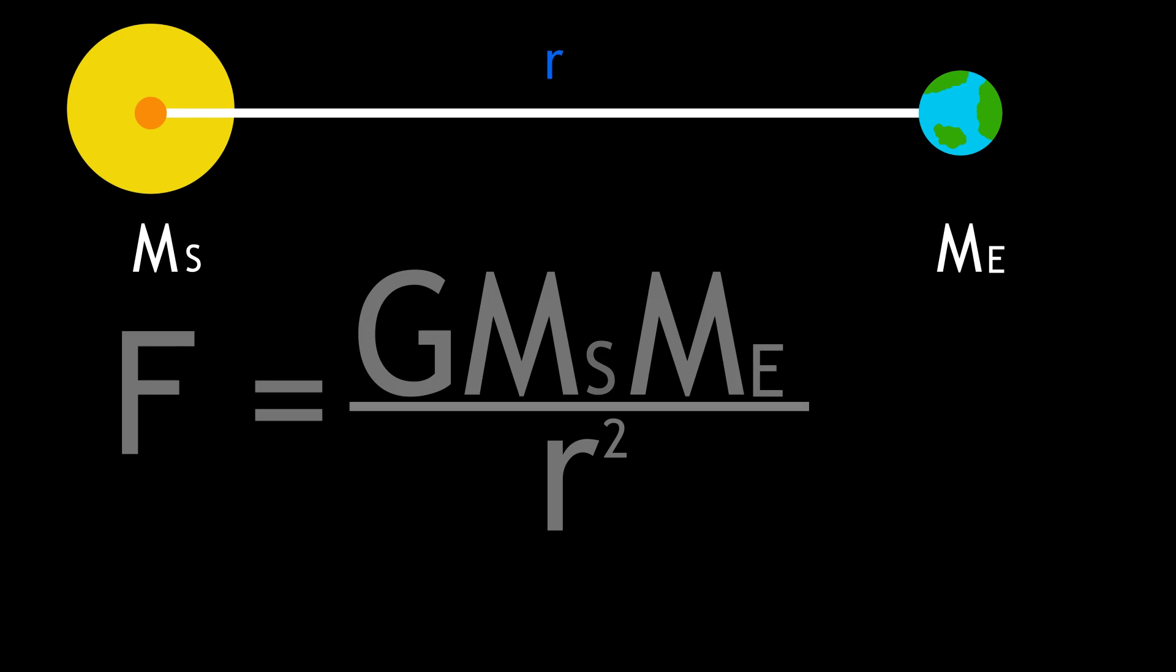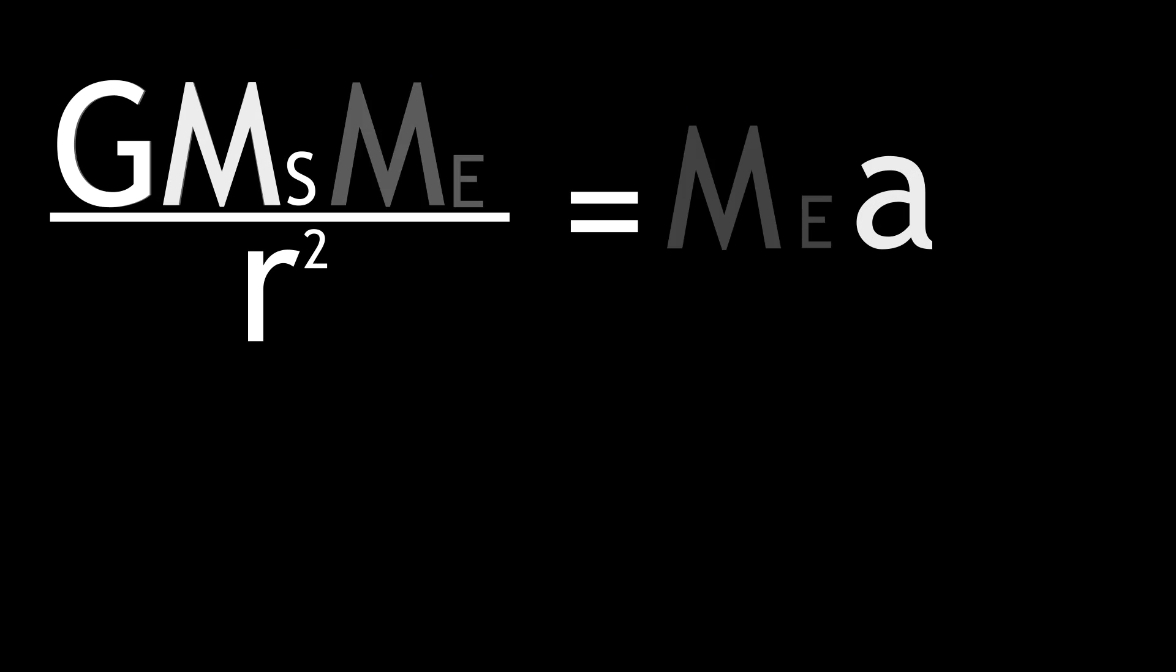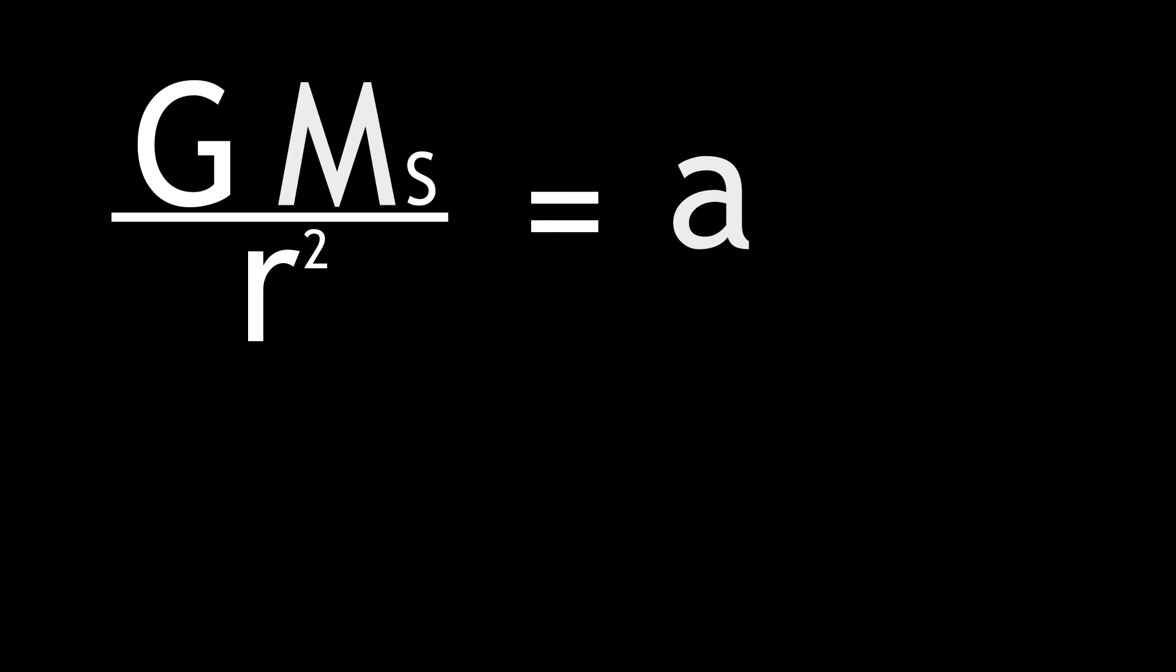We can write down the gravitational force acting on the Earth. F equals G MS ME over r squared, where MS is the mass of the Sun. Using Newton's second law, we can equate our two expressions, and we find that the mass of the Earth cancels, leaving us with an expression for the Earth's centripetal acceleration around the Sun.